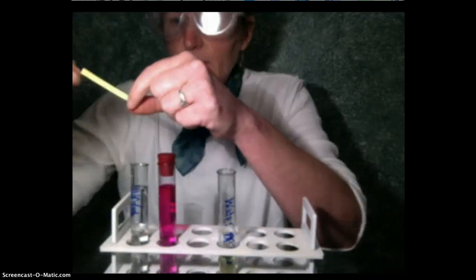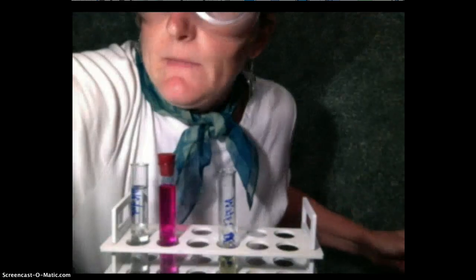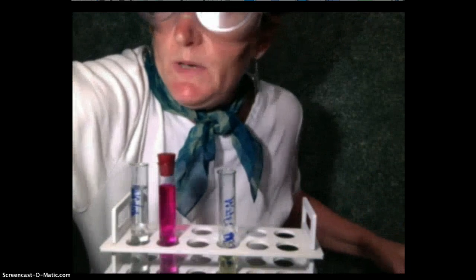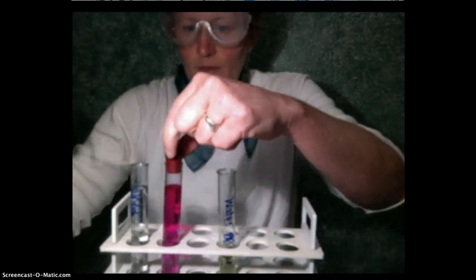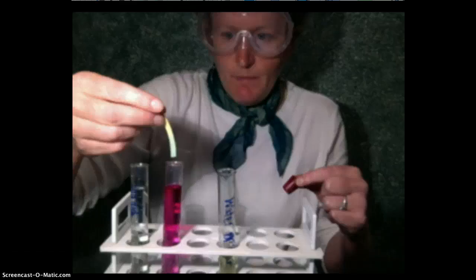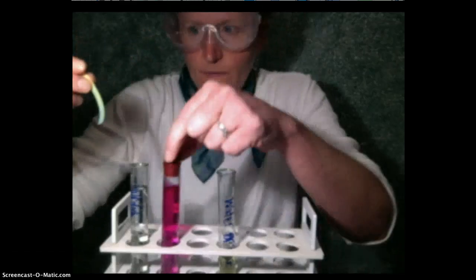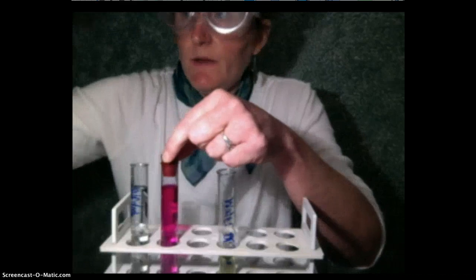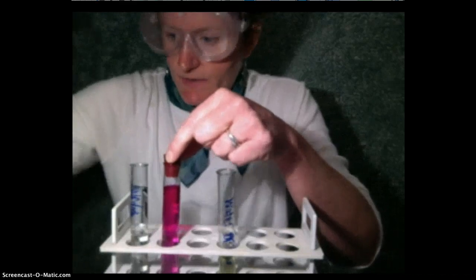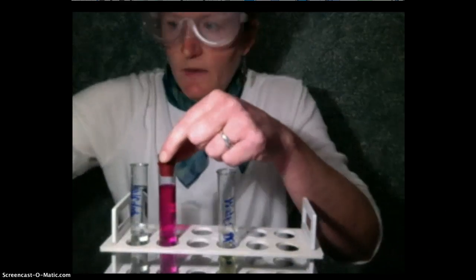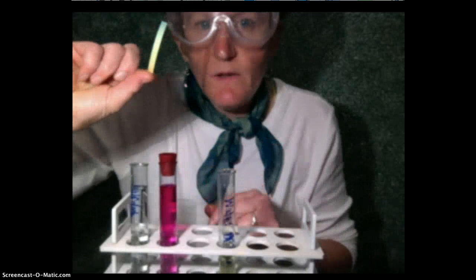If you want to explain bromothymol blue and ammonia at the end of your lab, you can get bonus points. There it goes to blue. Wave it around in the air, get rid of the ammonia molecules that are sticking to the paper. If I let it sit long enough, it'll go back yellow. So those are the indicators.